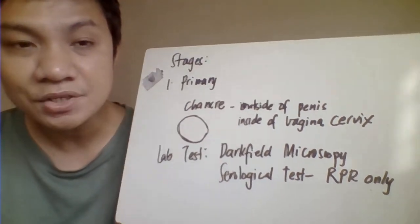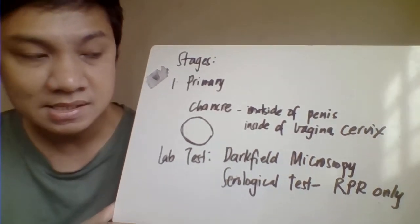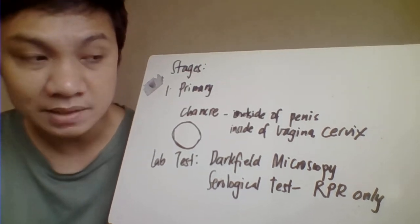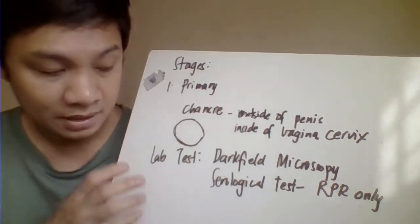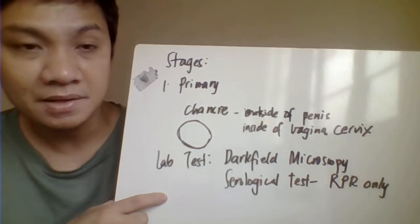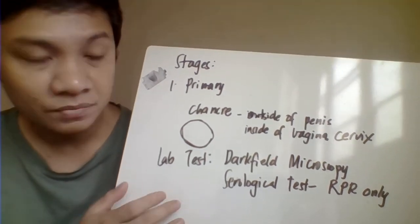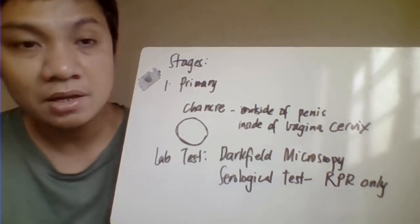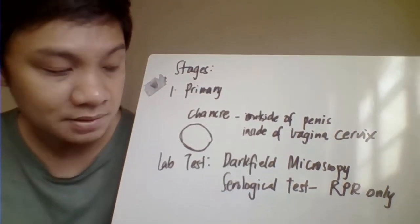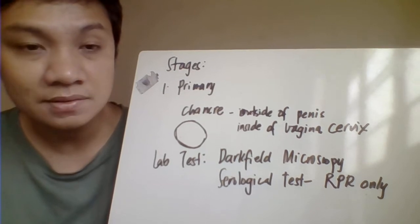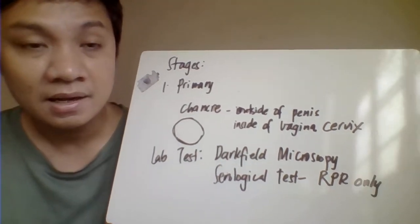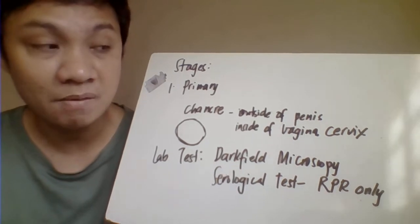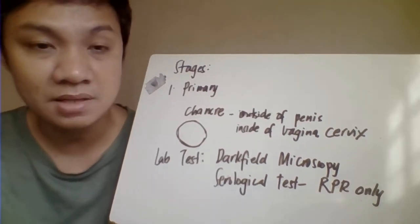The lesion lasts for 1 to 6 weeks and then heals spontaneously. Laboratory tests to diagnose the primary stage include dark field microscopy and serological tests — only RPR (Rapid Plasma Reagin) will give a positive result in serological tests at the primary stage.